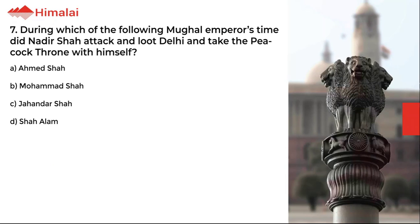Question number 7. During which of the following Mughal Emperor's time did Nadir Shah attack and loot Delhi and take the Peacock Throne with himself? A. Ahmed Shah, B. Muhammad Shah, C. Jahandar Shah, D. Shah Alam. The correct option is B.